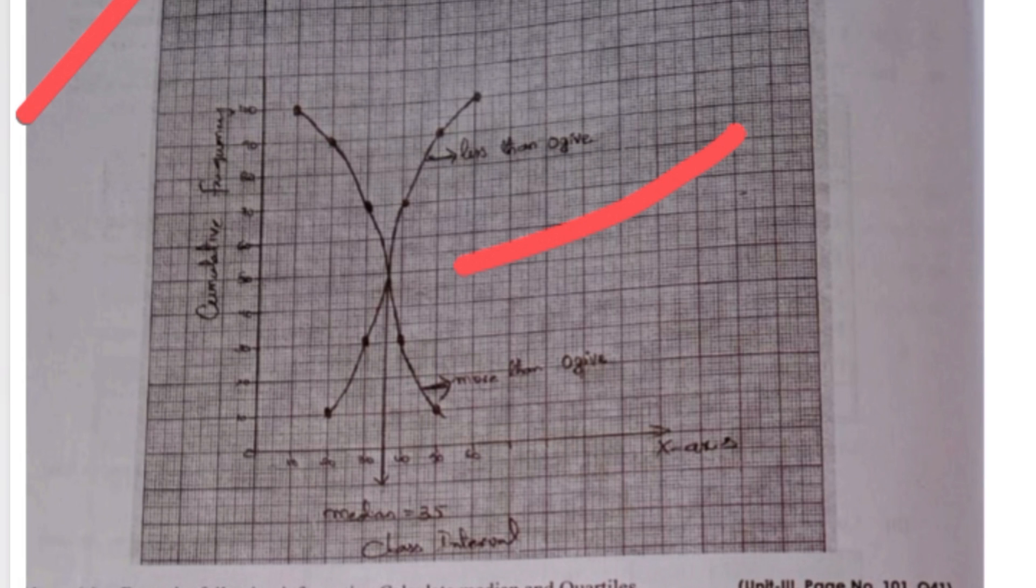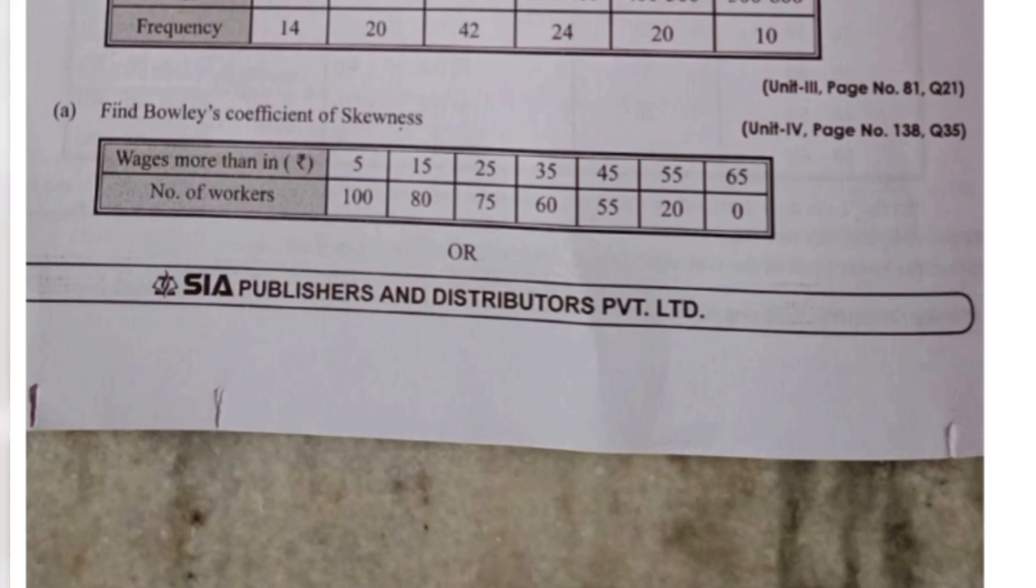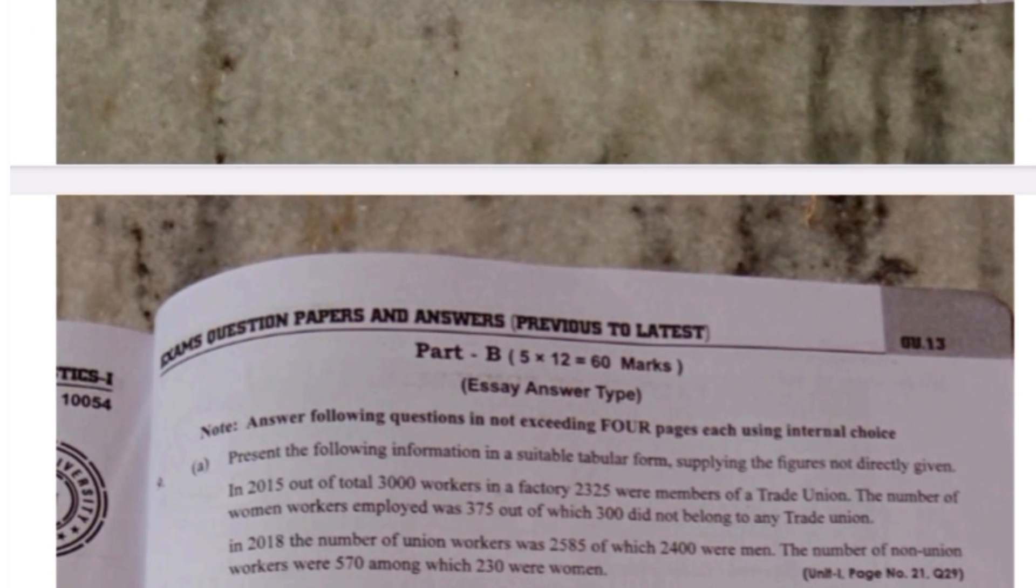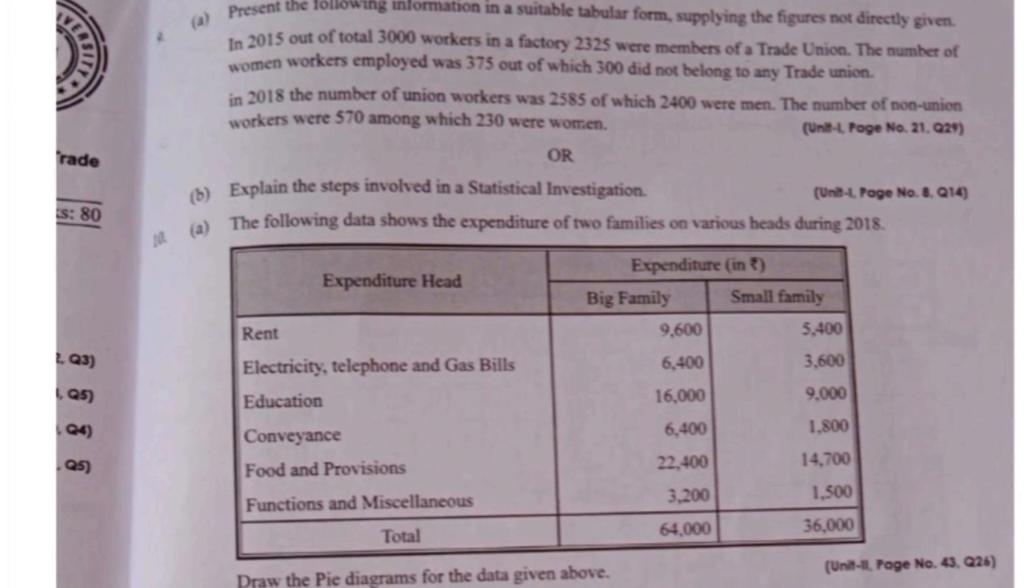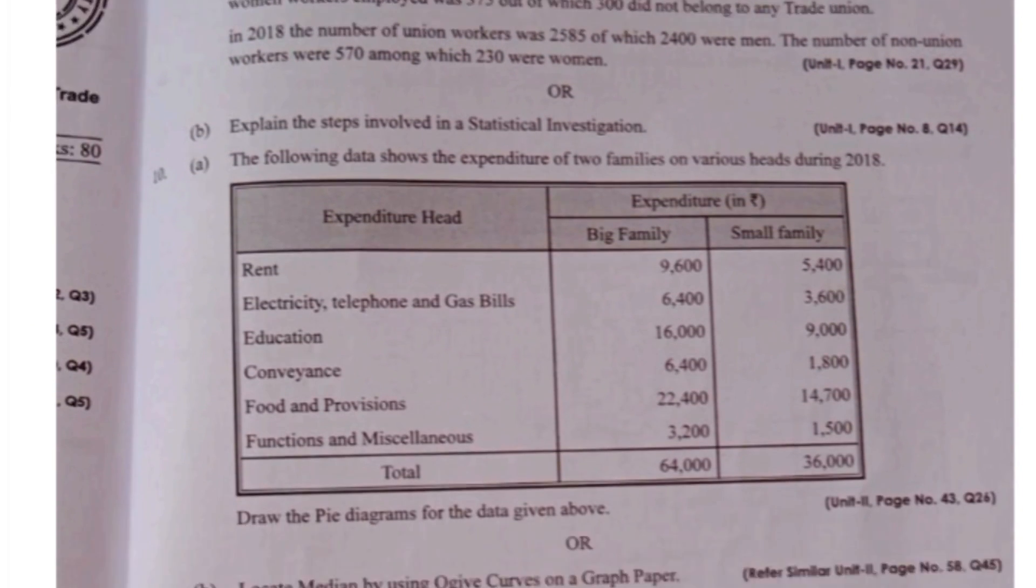Here from third year they asked about the medians and quartiles and step deviation method, and from fourth unit Karl Pearson's coefficient of skewness. Like this type of question papers, if you practice this type of question papers then you can easily understand.